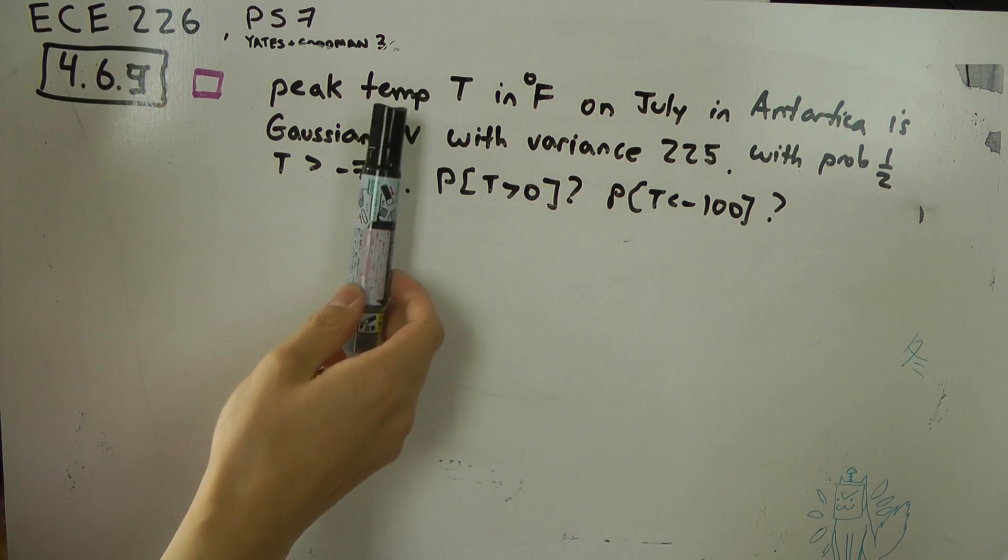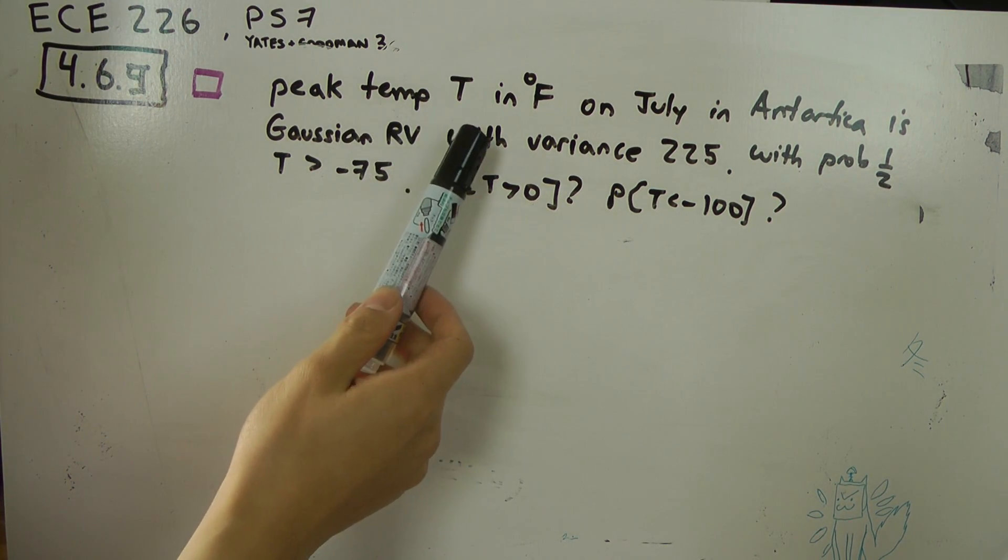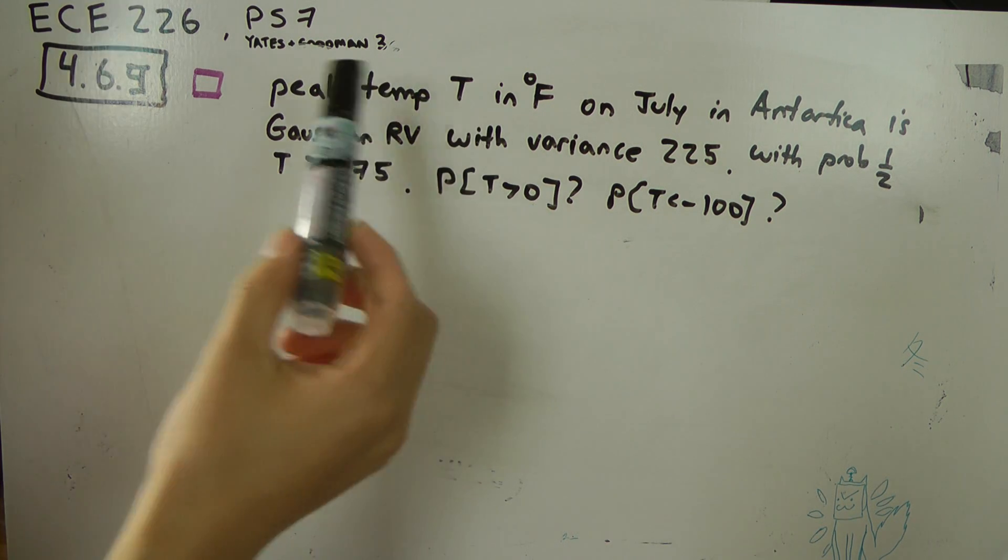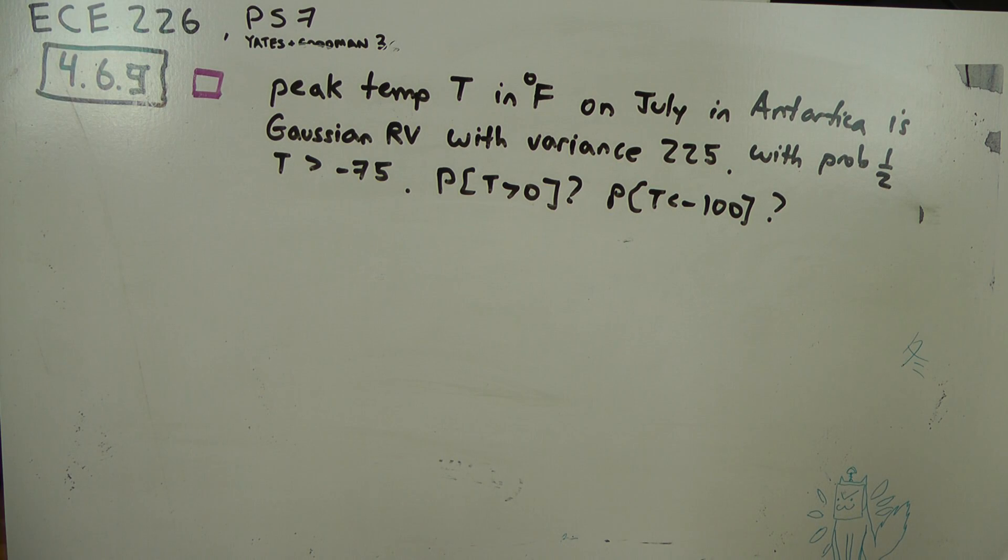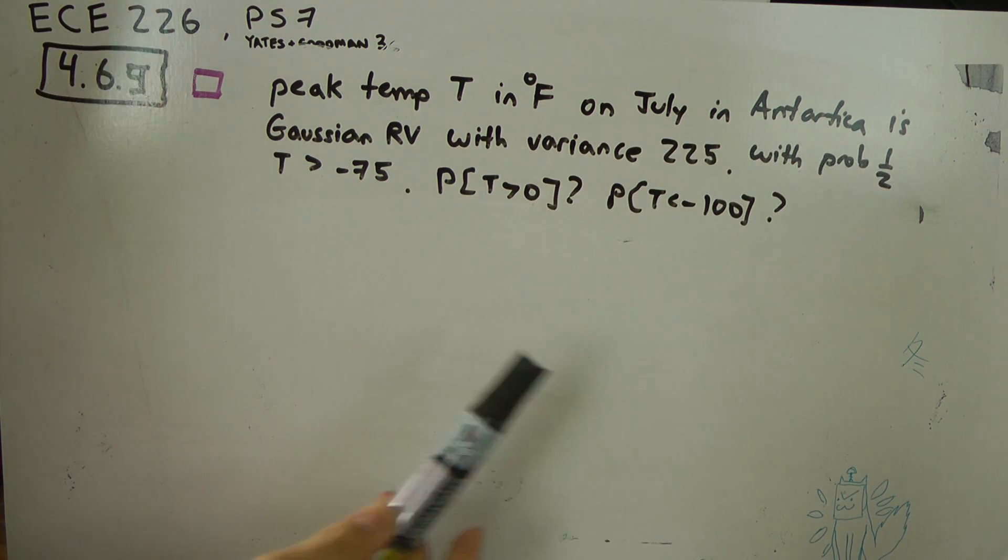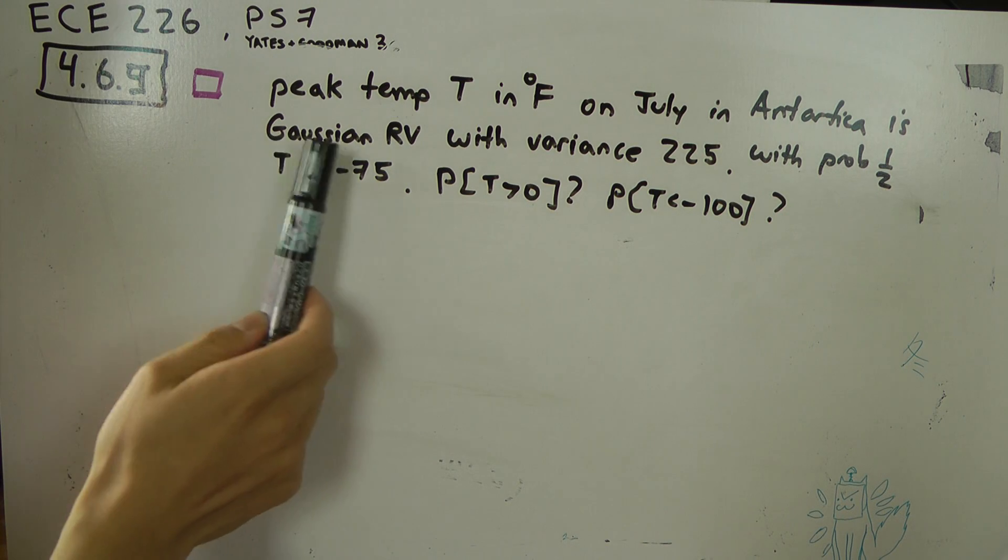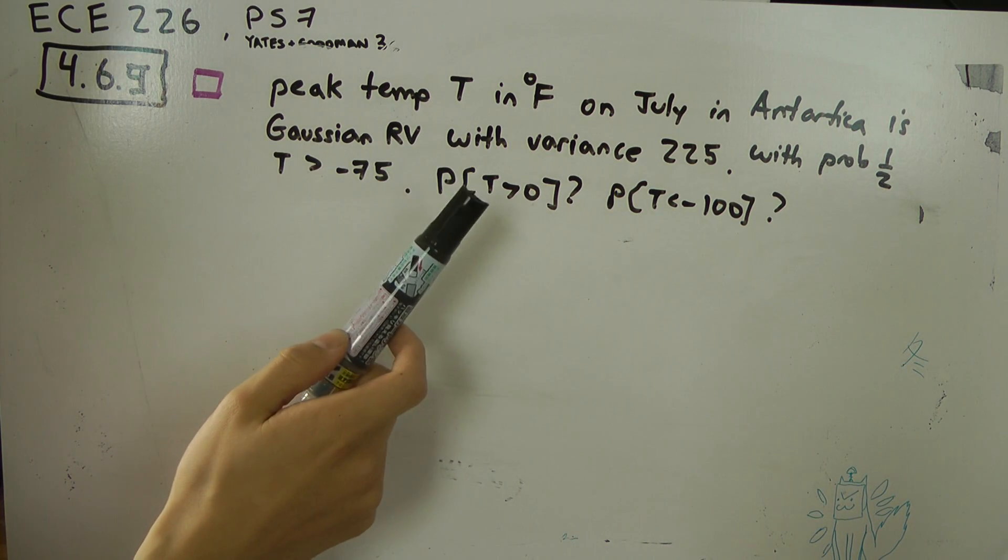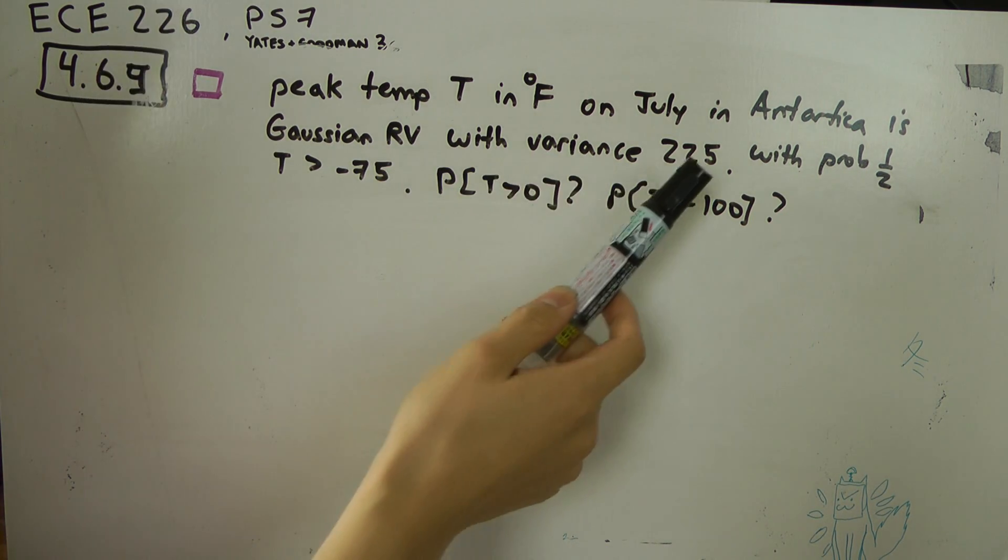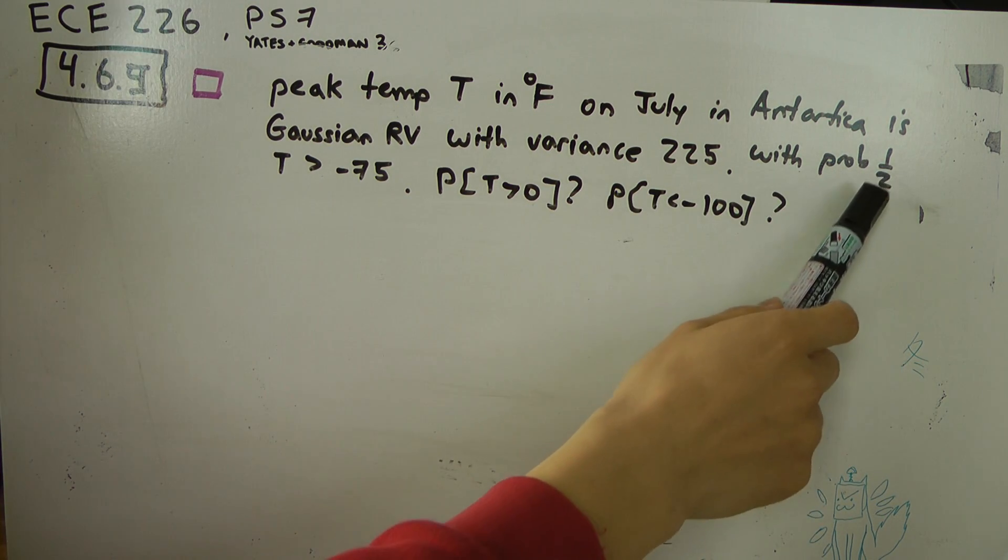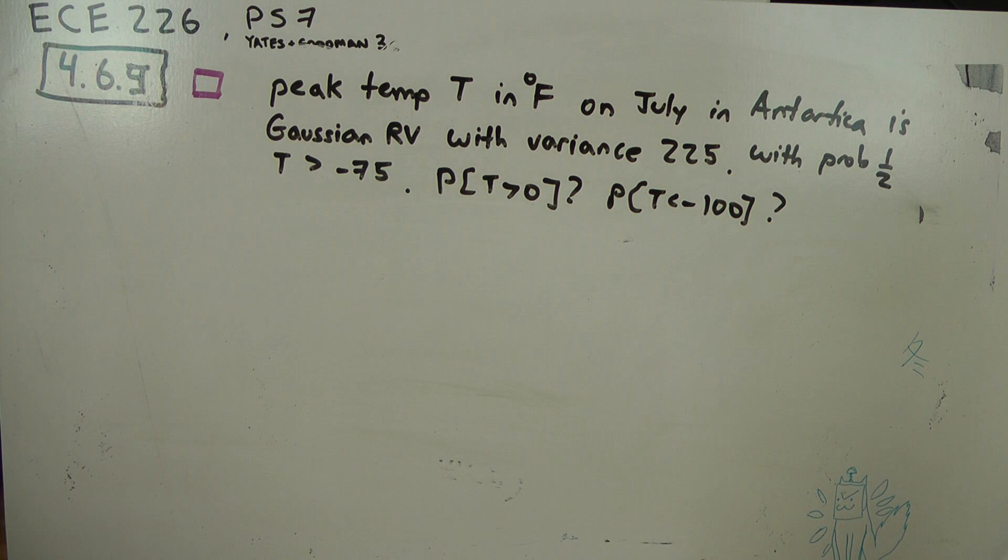We're looking for the peak temperature in July in Antarctica in Fahrenheit. This is a Gaussian random variable, and we're given the variance and also the fact that the probability is one-half that it is greater than minus 75.